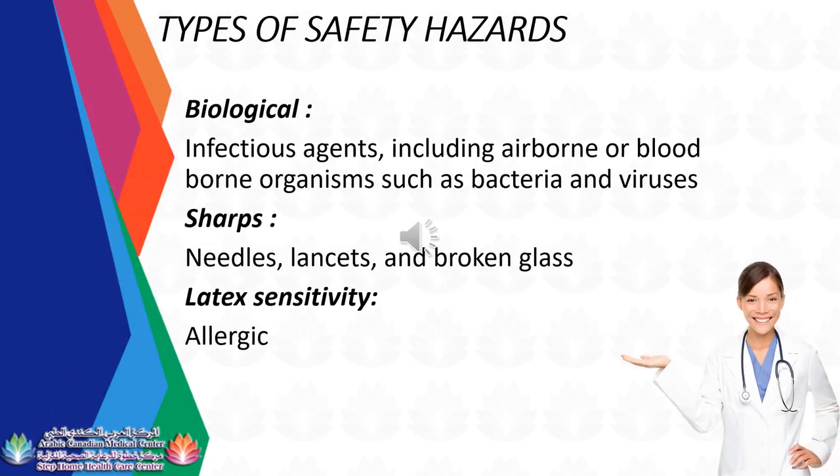Types of safety hazards: Biological — infectious agents including airborne or blood-borne organisms such as bacteria and viruses. Sharps — needles, lancets, and broken glass. Latex sensitivity — allergic reactions. Sharps hazards: Sharps, especially needles and lancets, are the most common hazards you will encounter as a phlebotomist. Sharps are dangerous both because of the physical injury they may cause and because they may carry blood-borne pathogens.